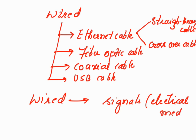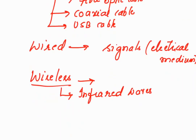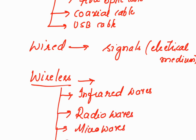In the wireless medium, data is carried by air and gets converted into waves. The different types of waves in the wireless medium are: infrared waves, radio waves, microwaves, and satellite. These wireless media can be used for very short distances, medium distance, and long distance communications — details will be explained in upcoming video lectures.